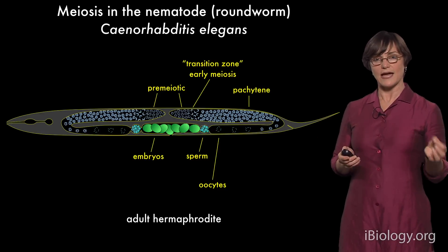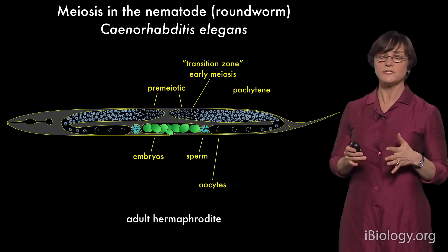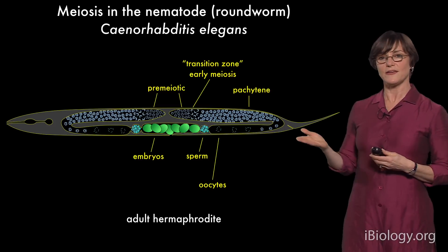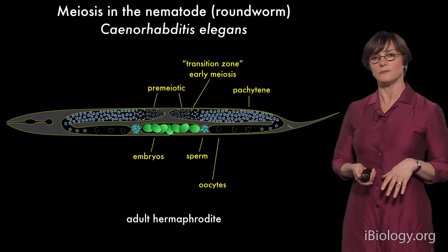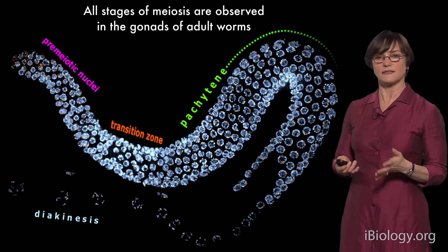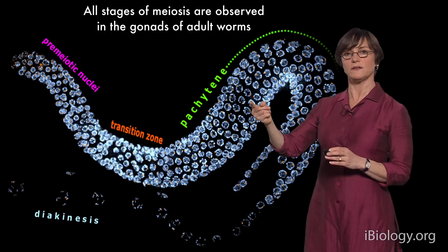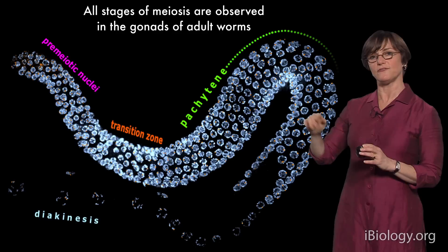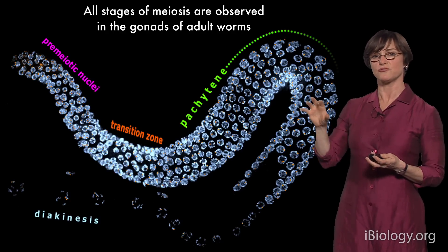We can dissect out the gonads from adult animals and stain them with a variety of reagents to visualize specific proteins or DNA sequences. We can also take advantage of the fact that these animals are transparent and watch meiosis in living animals. If we dissect out the gonad and stain it with DAPI, a dye that binds DNA, we see all the individual nuclei — each little sphere is a single nucleus. You're looking at a projection through about half of this gonad, which is actually a tube like an ear of corn, with nuclei arranged around a central matrix.